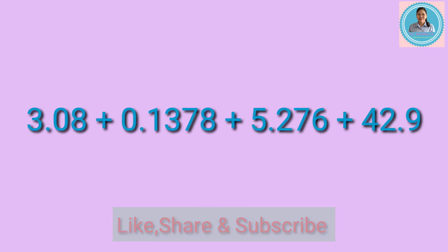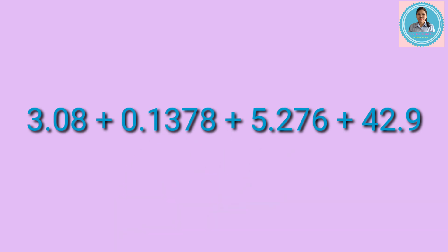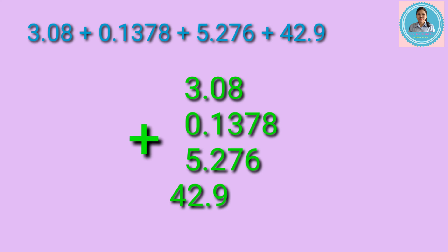Next example: 3 and 8 hundredths plus 1,378 ten-thousandths plus 5 and 276 thousandths plus 42 and 9 tenths. Let's arrange the numbers in columns, aligning the decimal point and the digits according to their place value. This is the proper arrangement of the numbers.